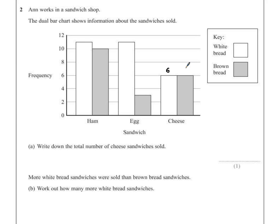The brown bar is exactly the same height, so that's also going to be 6. The total number of cheese sandwiches then must be both of those numbers added together. 6 add 6 is 12.